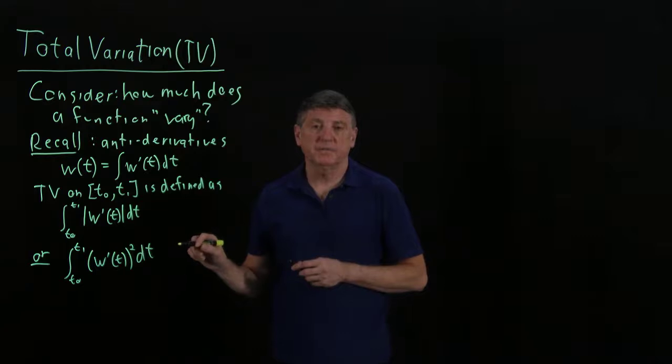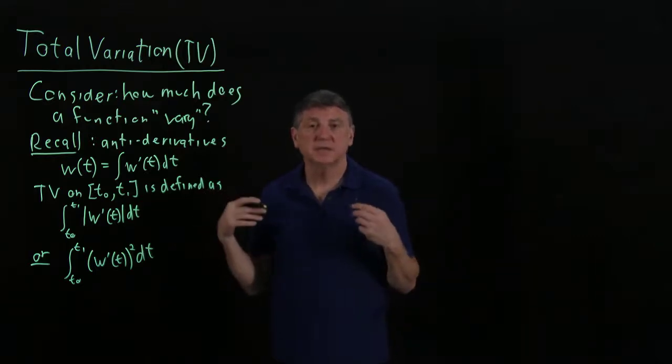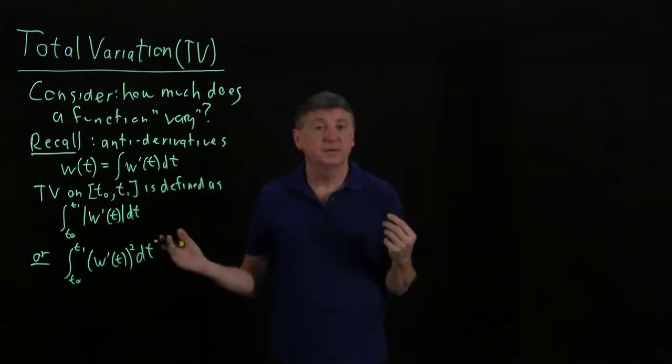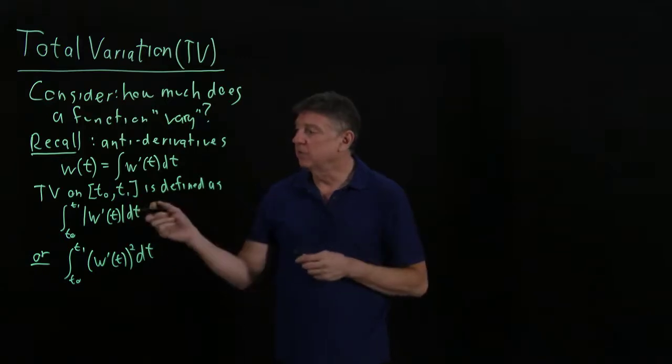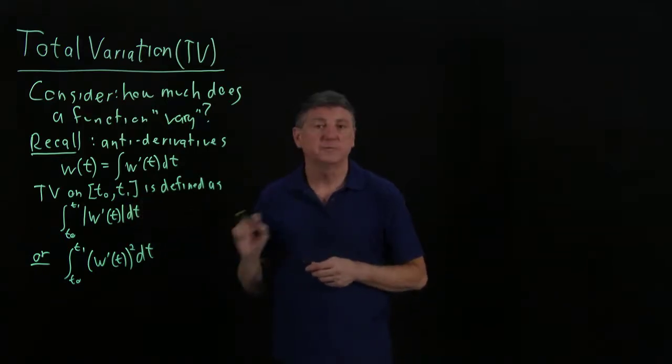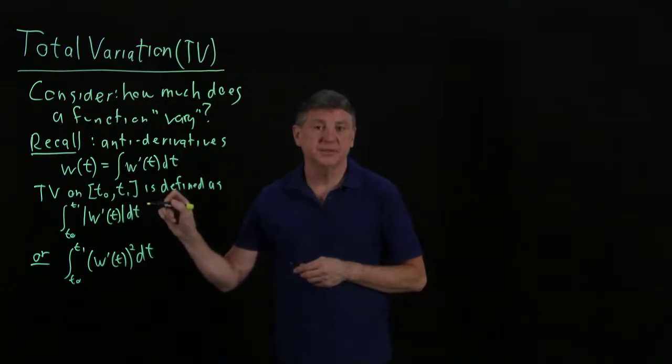We'll use the square definition because it will let us take derivatives in a fairly straightforward manner, and we know that the absolute value function has some annoying derivative properties at 0.